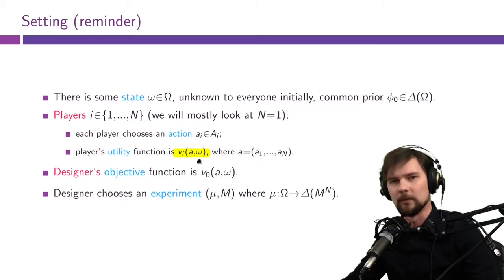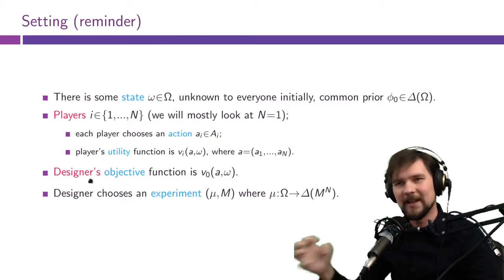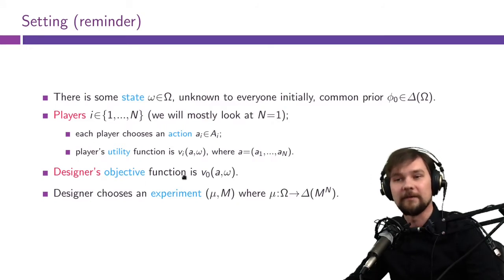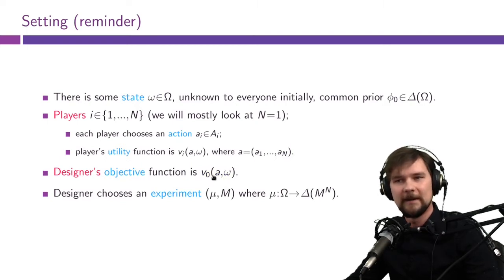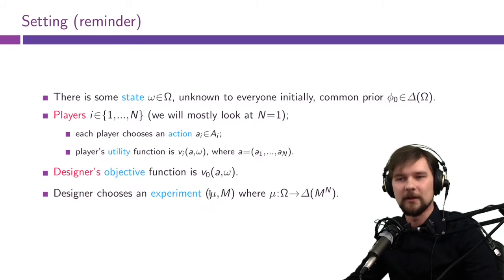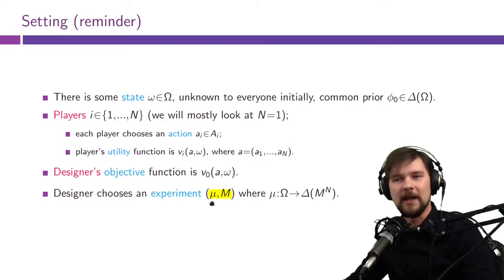In contrast to mechanism design where we designed the game itself, in information design the game is fixed but we are designing the players' knowledge about the state of the world. This knowledge is relevant because utility functions v_i depend on both actions of all players and on the state. By manipulating their knowledge, we can manipulate the actions they choose. The designer selects an information structure to maximize an objective function v_0(a, omega). The instrument the designer has is the experiment, which is the object (mu, M).